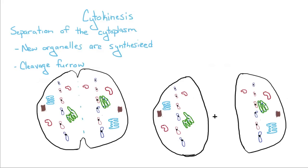Now, the last part of cell division is cytokinesis, which is the separation of the cytoplasm. This is when new organelles are going to be synthesized. And it forms this thing called a cleavage furrow, which is when the cell is actually going to split.